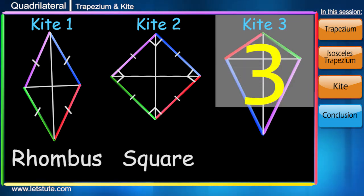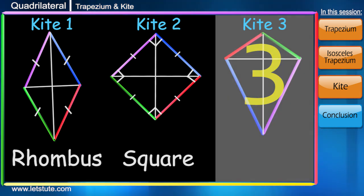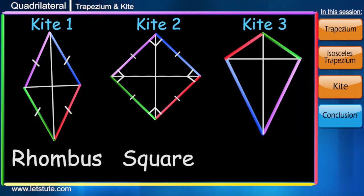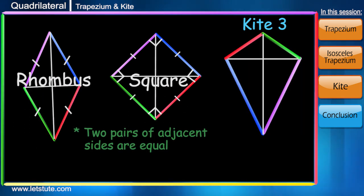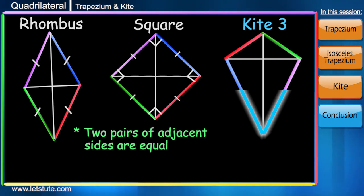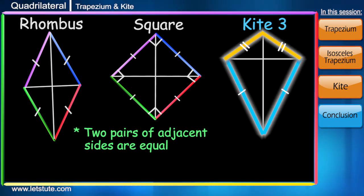My third kite is a very special one. We haven't seen such a quadrilateral till now. Both its pairs of adjacent sides are equal. This is one of the criteria for a quadrilateral to be a kite.